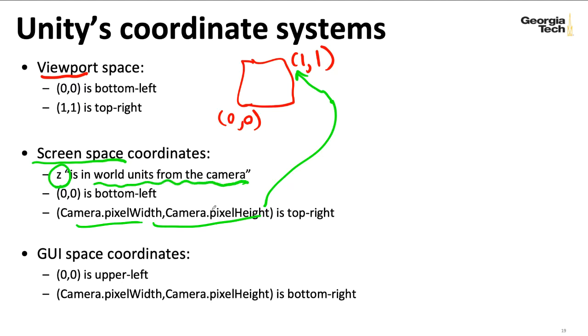So for coordinates for Unity's built-in graphical user interface facilities, 0, 0 is now in the upper left. You've got these camera pixel coordinates now in the bottom right.